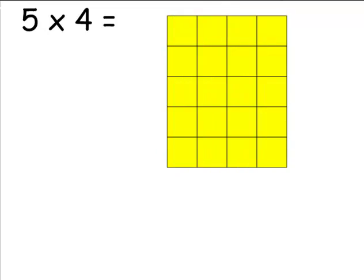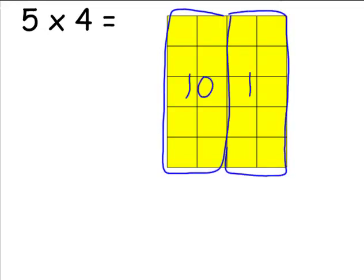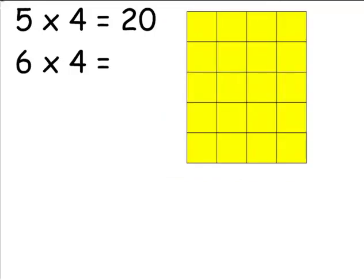Another student might say I know 5 times 2 is 10 and then I just doubled it, and I can show that on the array. Once you ask who thought of it in a different way, you'd be surprised by what your kids come up with. Most of the facts in this string are organized in pairs with the 5 times fact first, followed by the related 6 times fact. In each case the extra row for the 6 times array is hiding and you can just pull it down into place before you discuss the 6 times fact. It's a not-too-subtle way to nudge kids toward the target strategy, but remember that in almost every case there are other good strategies as well.